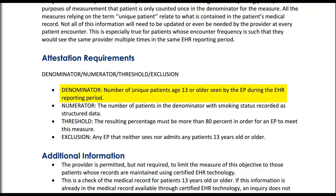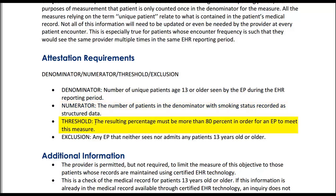Let's have a look at the attestation requirements. The denominator is the number of unique patients aged 13 years old or older seen by the eligible professional during the EHR reporting period. The numerator is the number of patients in the denominator with smoking status recorded as structured data. The threshold is that the resulting percentage must be more than 80% in order for an eligible professional to meet this measure.